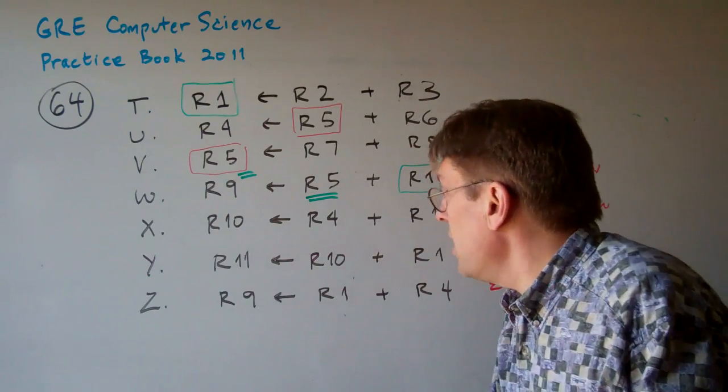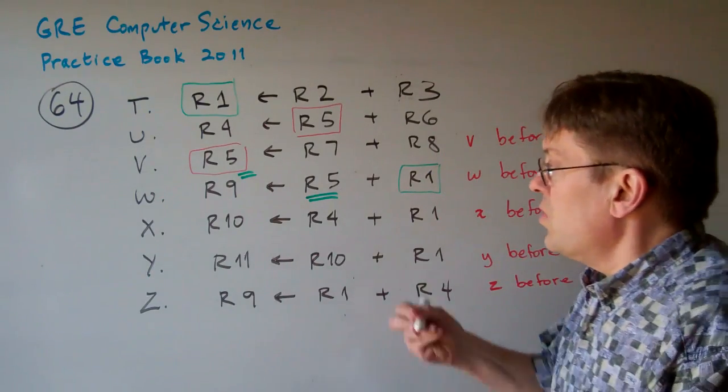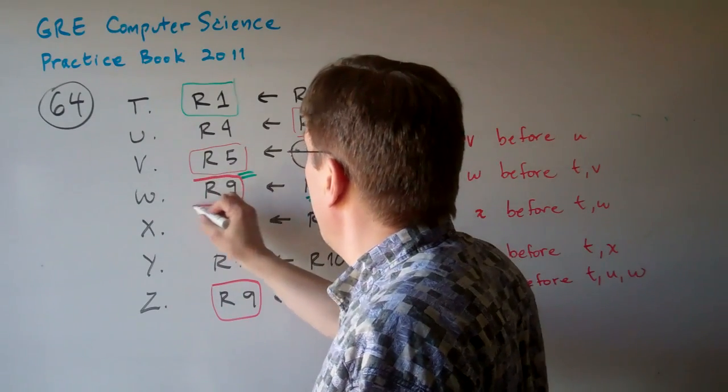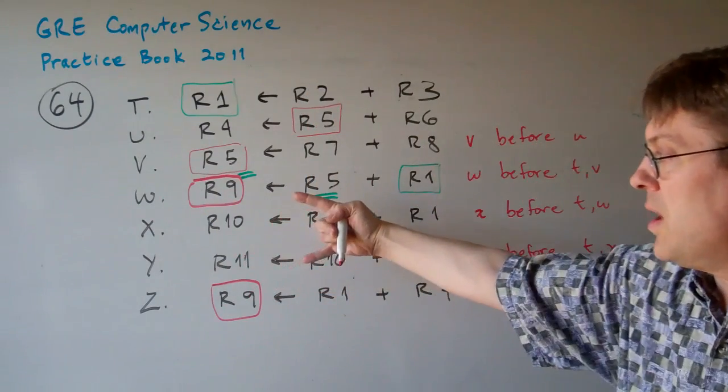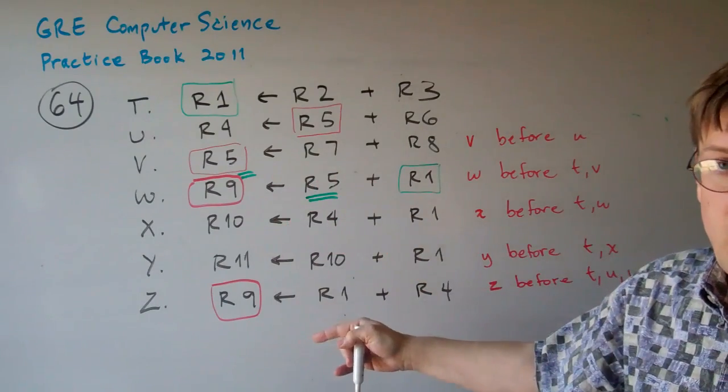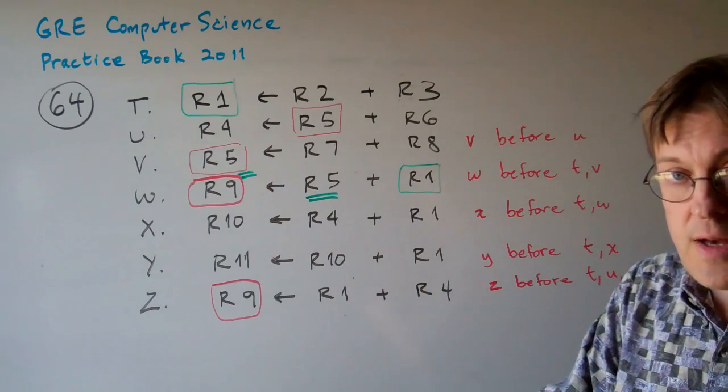Now, the interesting thing about W is the reason why Z can't come before W is because both of them output to R9. And so, if Z comes before W, the value in register 9 is not going to be right.